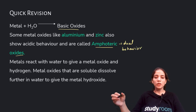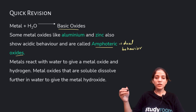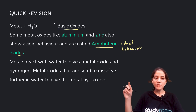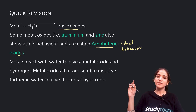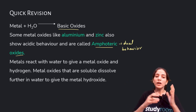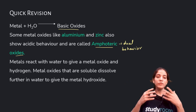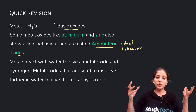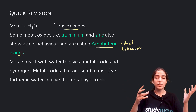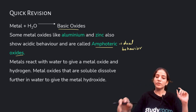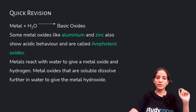Metal reacts with water to give a metal oxide, and some hydrogen gas is released. Metal oxides that are soluble dissolve in water to give the metal hydroxide.